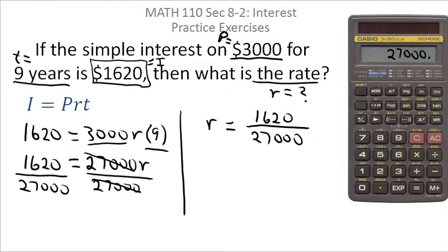So using your calculator to do that, you would have 1620 divided by 27,000. And what you'll see in the calculator display will then be the answer. So little r, the annual interest rate is 0.06.